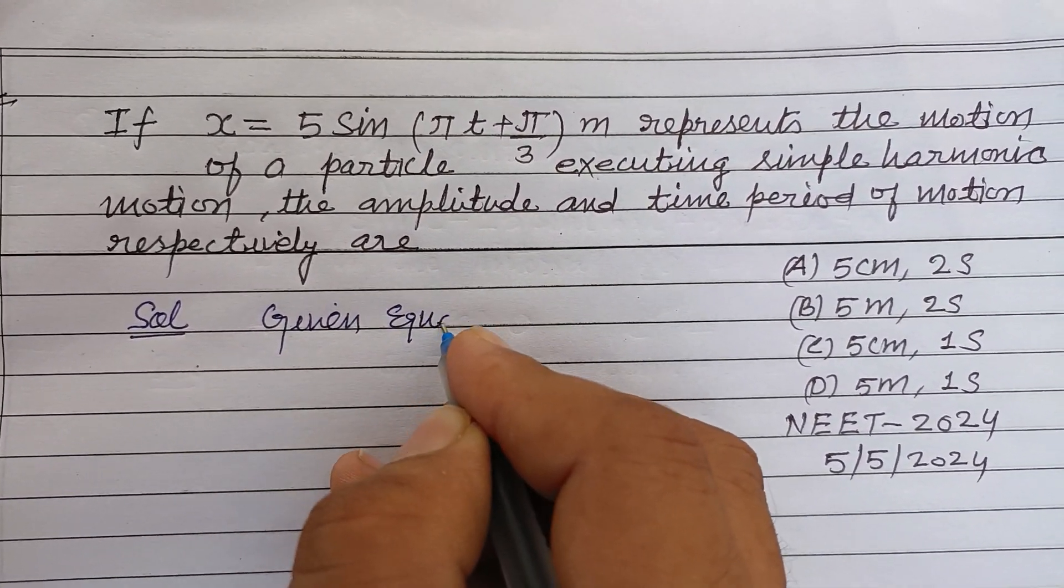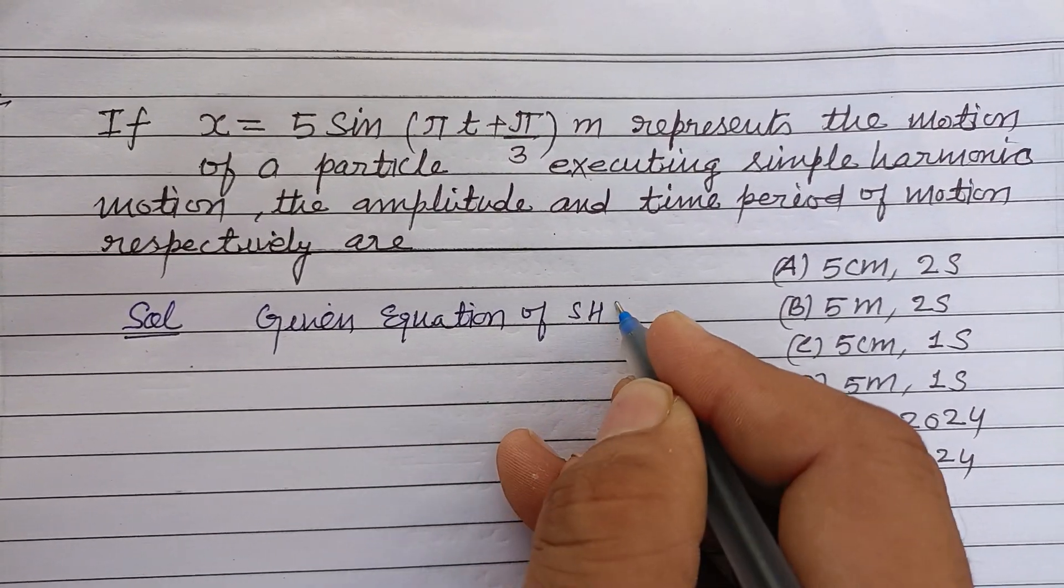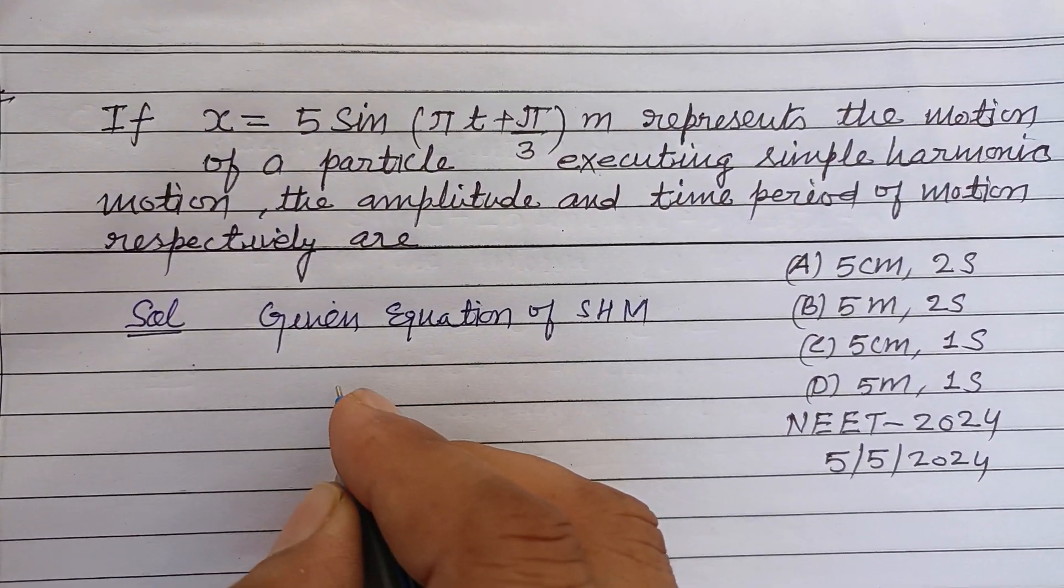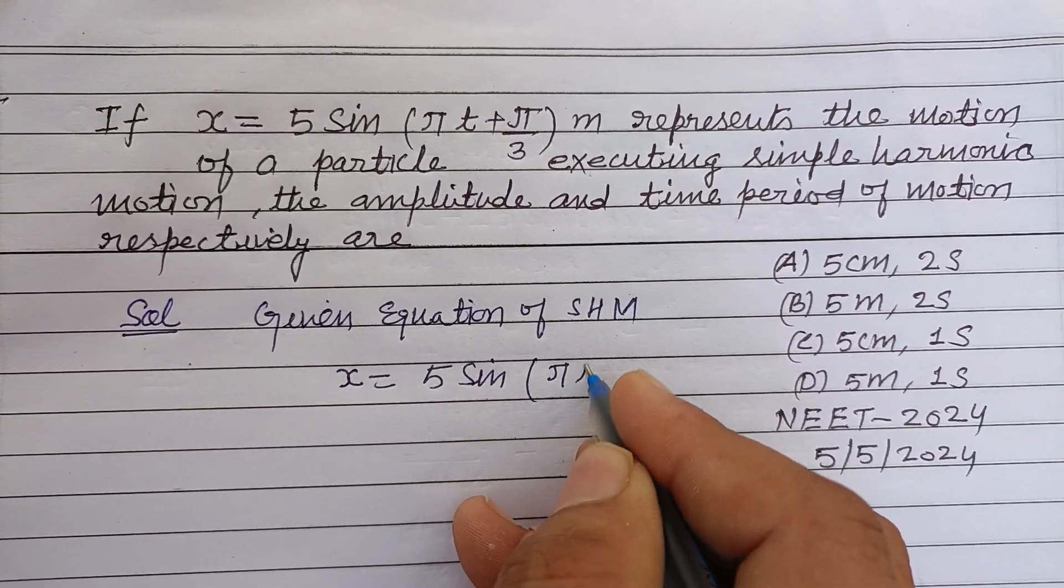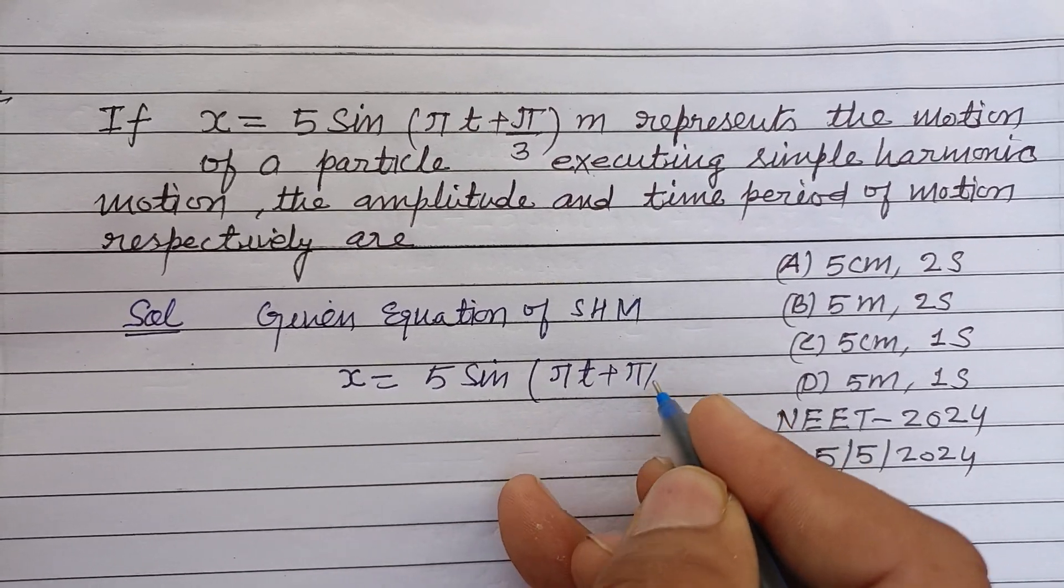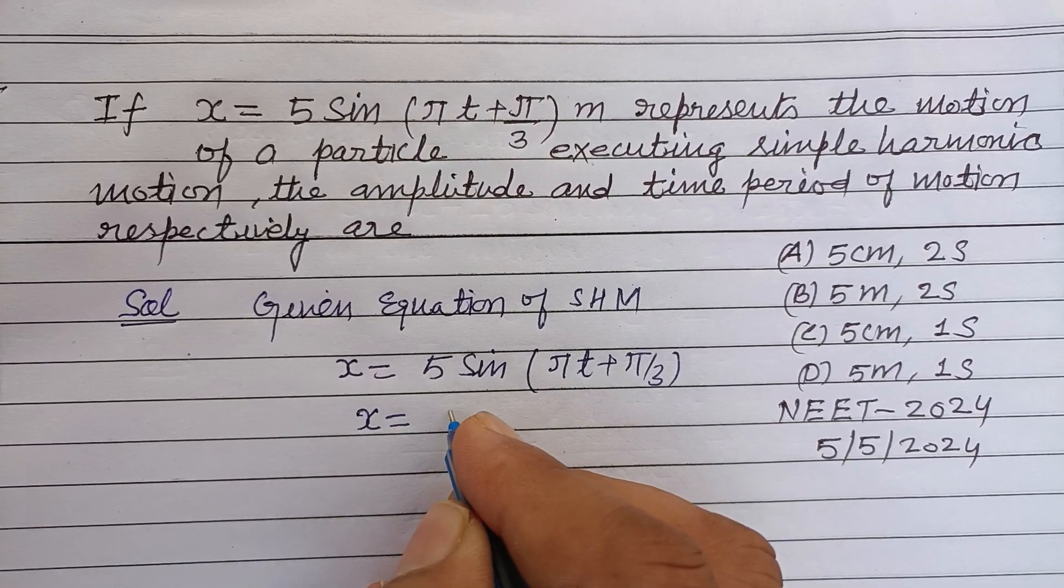So students, given equation of SHM here, x equals 5 sin(πt + π/3). The standard equation is x equals A sin(ωt + φ).